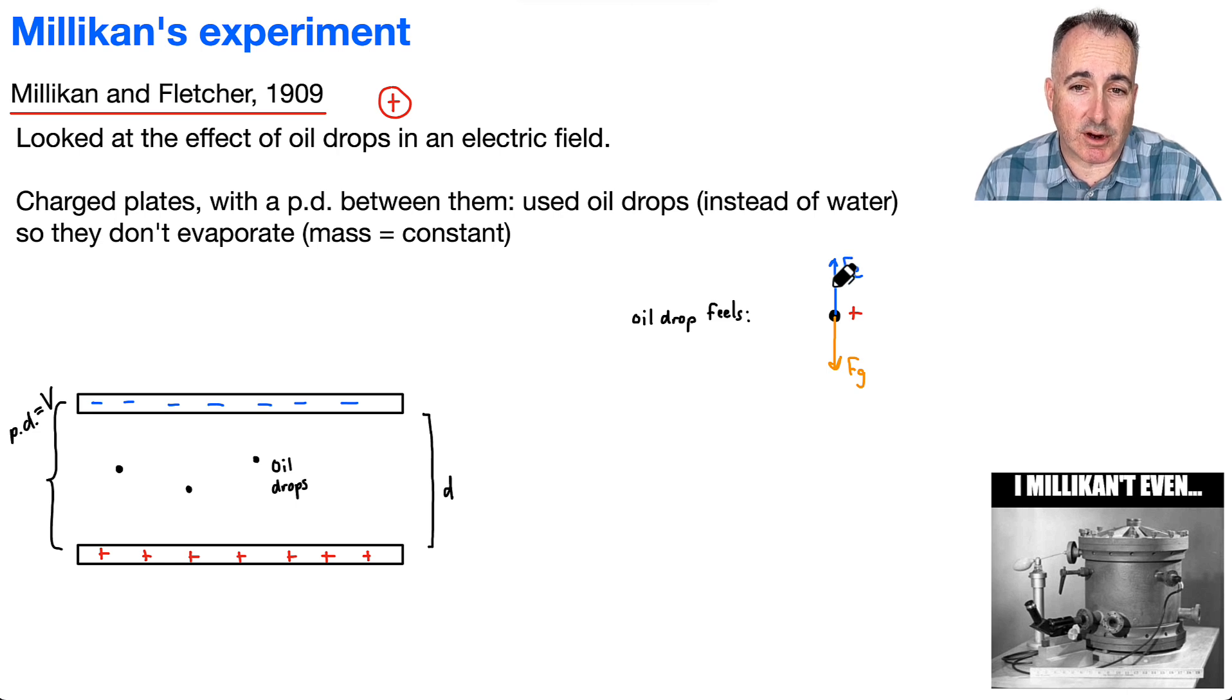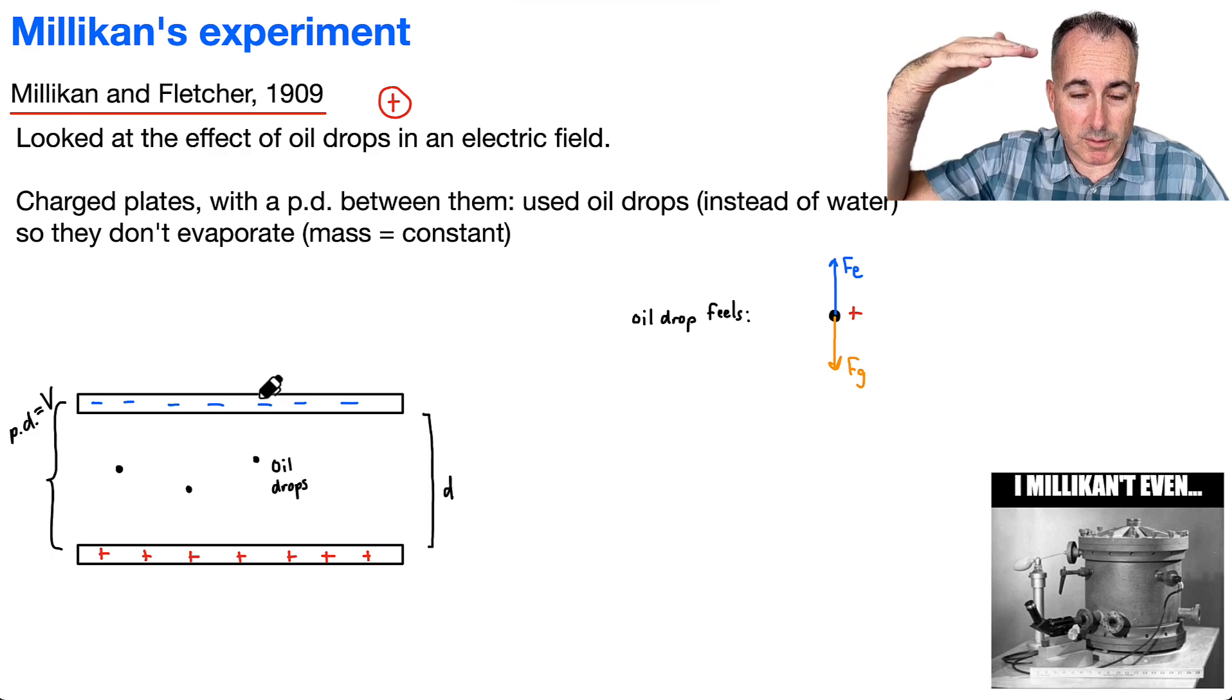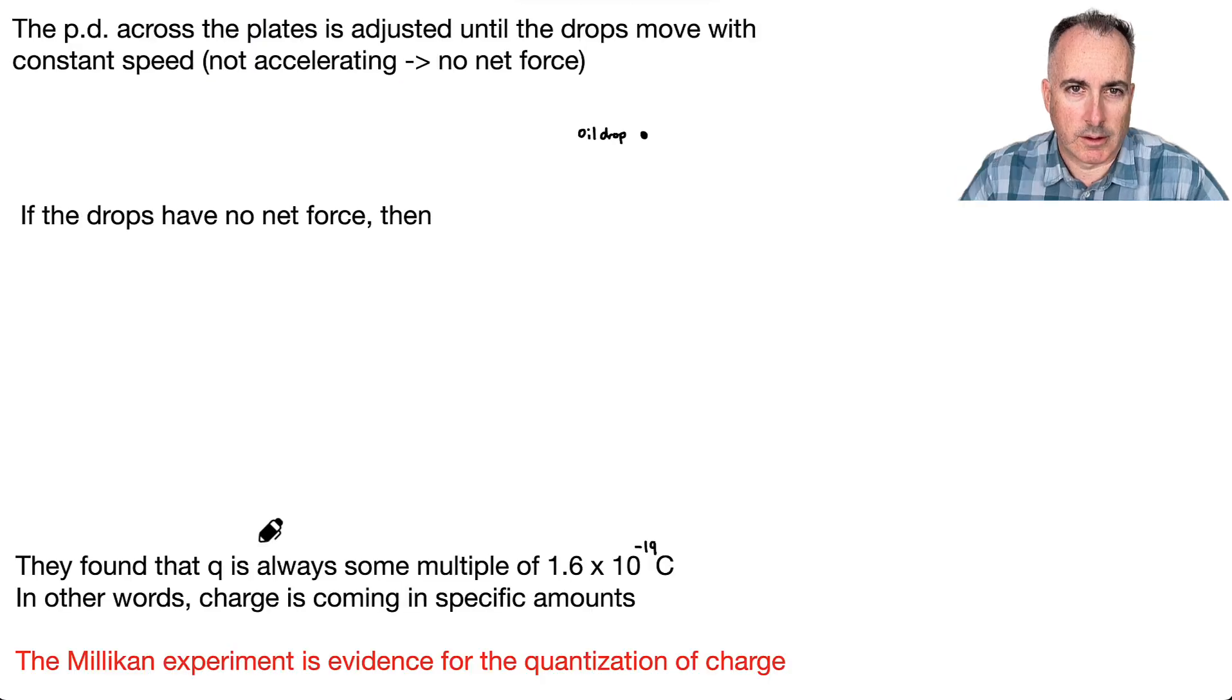And we don't know how big these ones are. Maybe F_E is bigger. Then these oil drops are actually going to go up. Or if you make it too small, like if you change the potential difference here, you make it too small, then the oil drops will drop down.